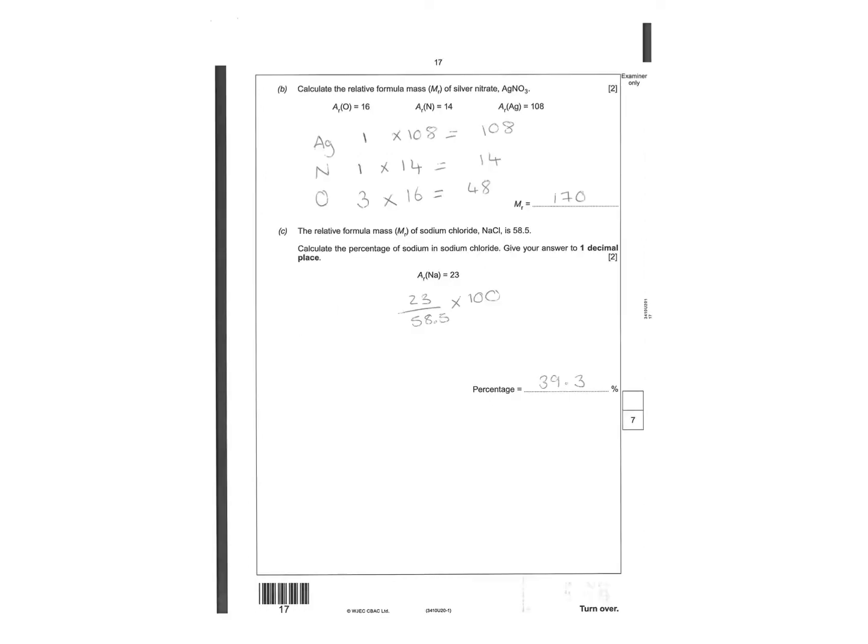Then it's working out the Mr. You've got one silver, one nitrogen, three oxygens. Add it all together - be 170. Calculate the percentage of sodium in sodium chloride. Sodium is one sodium is 23, the whole total is 58.5, times by 100 be 39.3 percent.